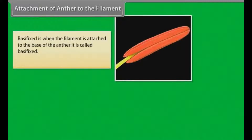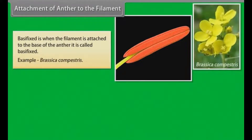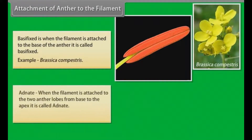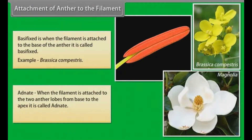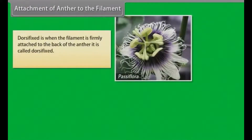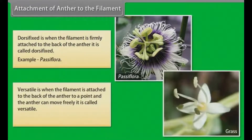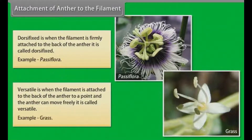Attachment of anther to the filament. Basifixed: when the filament is attached to the base of the anther; example, Brassica campestris. Adnate: when the filament is attached to the two anther lobes from base to the apex; example, Magnolia. Dorsifixed: when the filament is firmly attached to the back of the anther; example, Passiflora. Versatile: when the filament is attached to the back of the anther at a point and the anther can move freely; example, Grass.